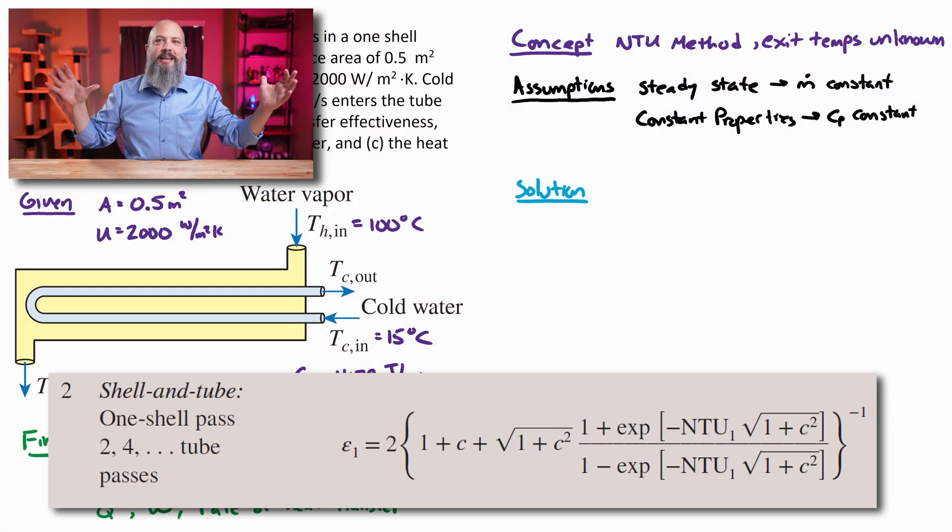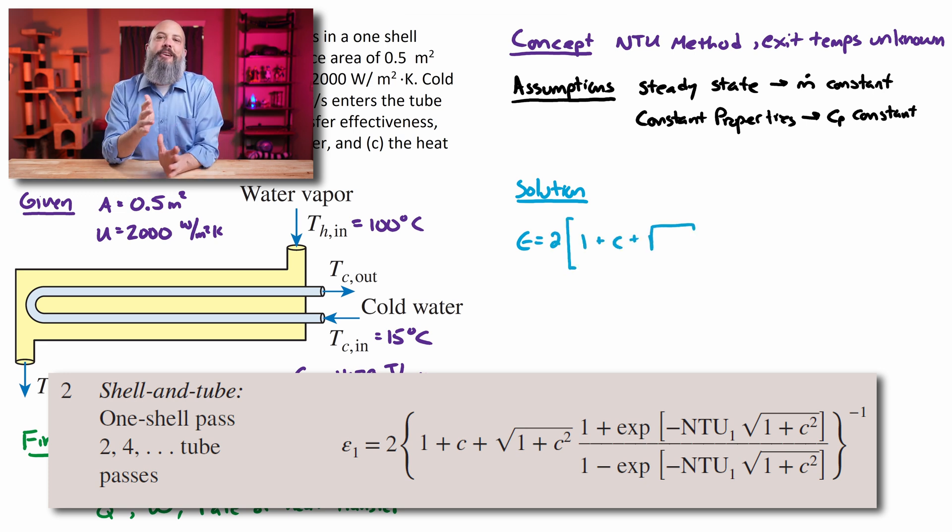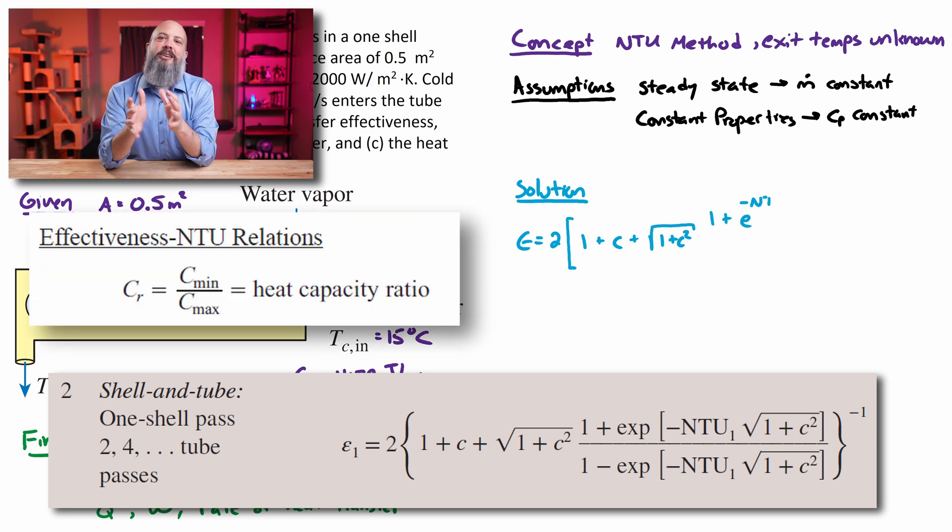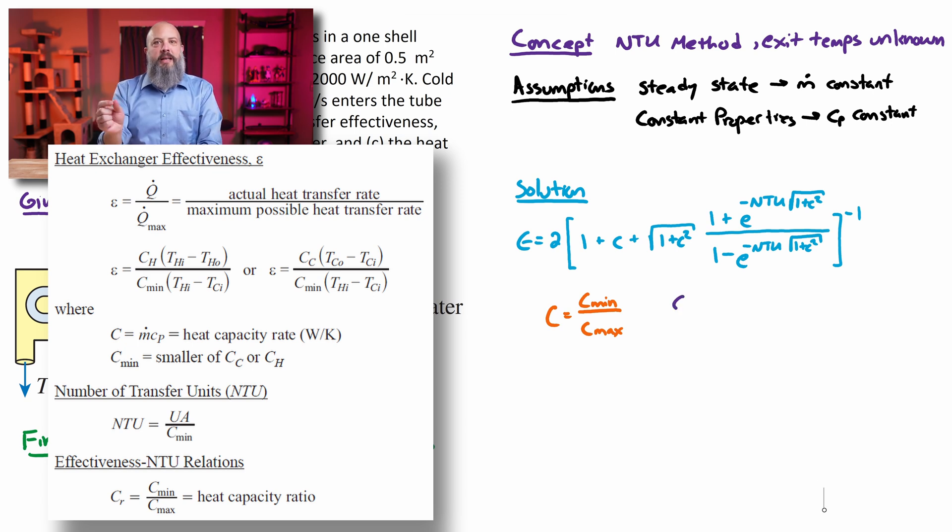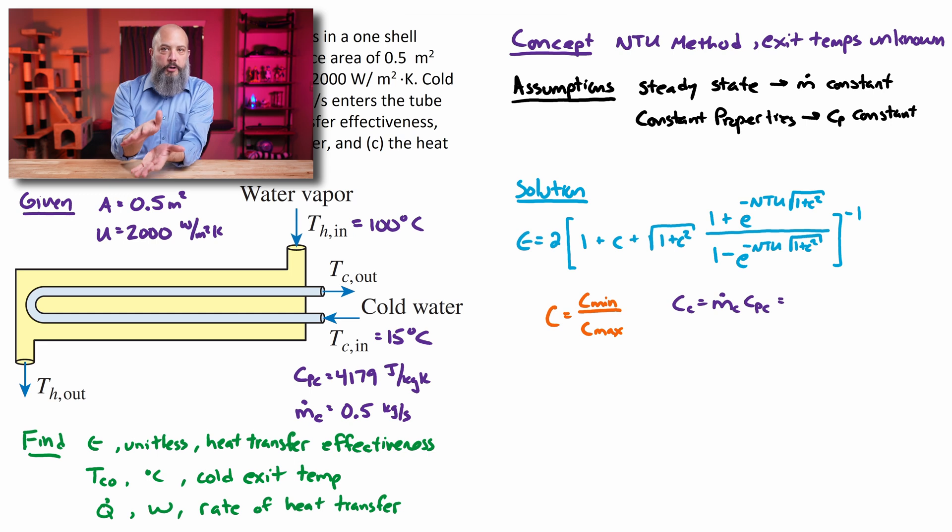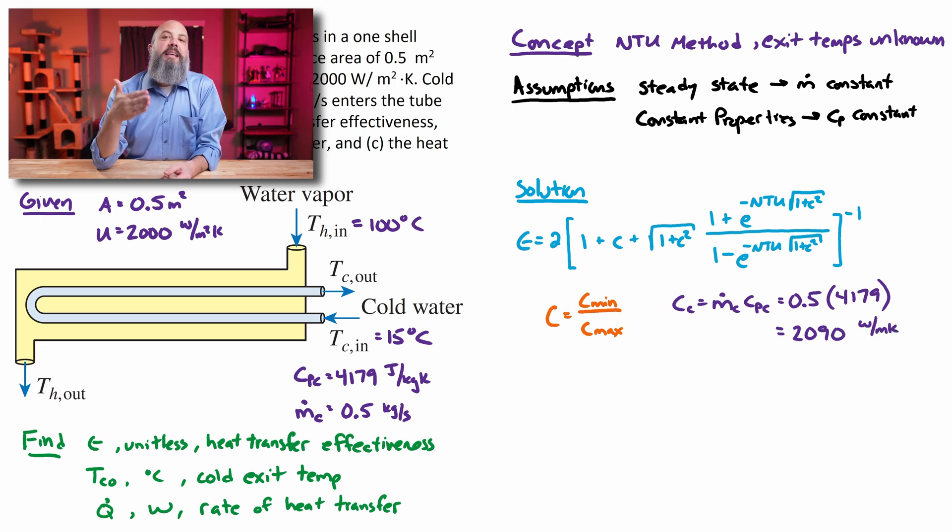I'm going to need to solve for C, the heat capacity ratio. You may also see this listed as CR, the ratio of C minimum over maximum value. And NTU is the number of transfer units. C is M dot CP, and there'll be a separate value for the cold water and for the water vapor. For the cold water, M dot times CP, we're given 0.5 kilograms per second and CP 4179, so 2,090 watts per Kelvin. That is the capacity rate for the cold flow.